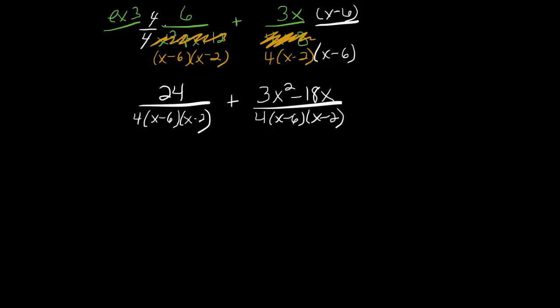Now that we have a common denominator, we're going to add our numerators. And I'm going to add it so that it appears in standard form. So we really get 3x squared minus 18x plus 24 over 4 times x minus 6 times x minus 2.